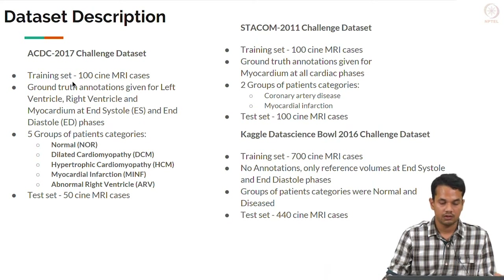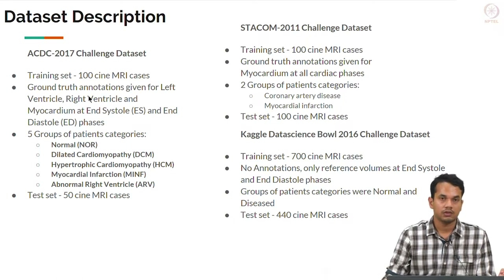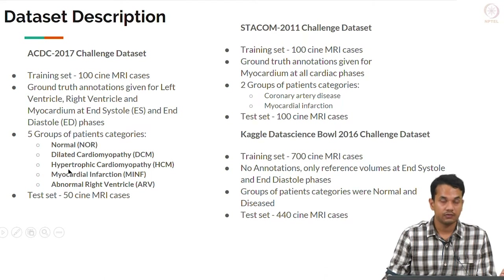For our challenge we used 3 publicly available datasets: the ACDC challenge dataset, the STACM, and the Kaggle data science challenge dataset. In the ACDC dataset we were provided with 100 cine MRI cases, and for the task of segmentation we were given ground truth annotations for the left ventricle, right ventricle, and the myocardium. These annotations were provided at end systole and end diastole. The MRI cases involved 5 groups of patients: normal, dilated cardiomyopathy, hypertrophic cardiomyopathy, myocardial infarction, and abnormal right ventricle. For validation, 50 cine MRI cases were provided. Similarly, in the STACM data, 100 cine MRI cases were provided with 2 patient categories, and the testing set was also 100 cases.